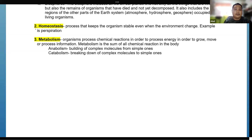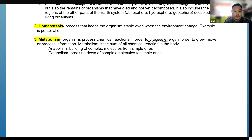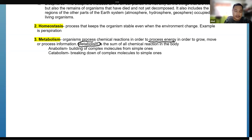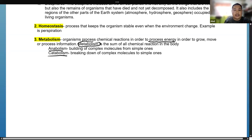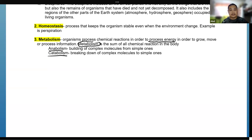Metabolism is the process of chemical reactions in order to process energy — to grow, move, or process information. It is the sum of all chemical reactions in the body. There are two important terms: anabolism, which is the building up of complex molecules from simple molecules, and catabolism, which is the breaking down of complex molecules into simpler ones.